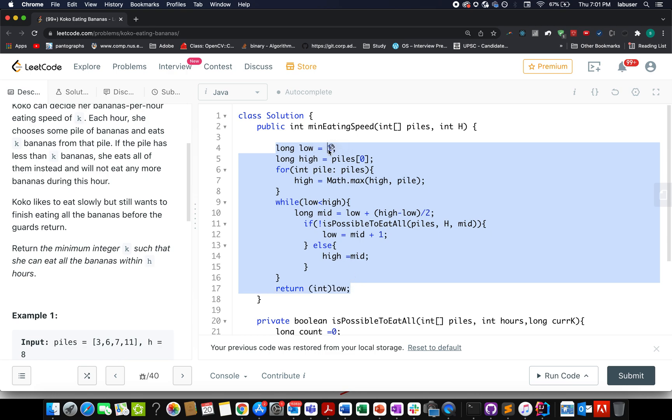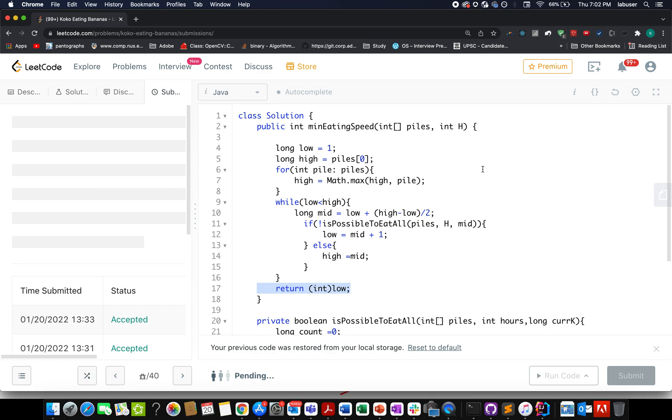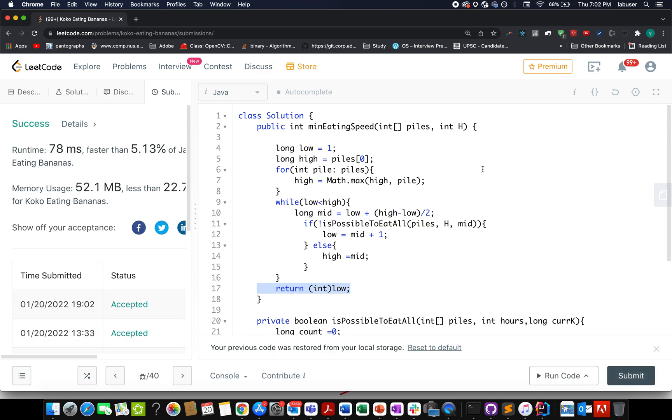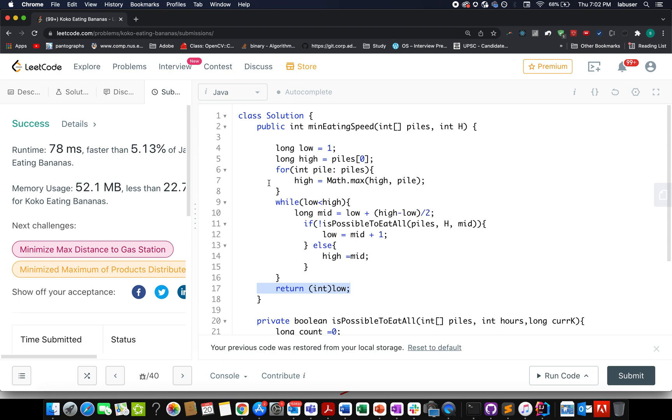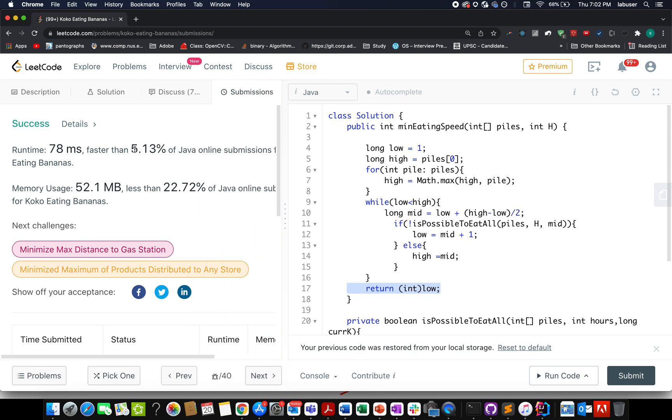The main crux of the problem lies in writing the binary search approach appropriately. So we have a low value set to 1, the high value set to the maximum value across the pile set, and we go with the standard way of writing the binary search approach on the range based values, where low is less than high you calculate the middle one. If it's possible to eat all bananas, what do you do? You update low to mid plus 1, otherwise you update mid to high. In the end you simply return the value of low. Pretty simple and straightforward, nothing rocket science. We have been doing this in the past and we have solved plenty of questions on these lines.